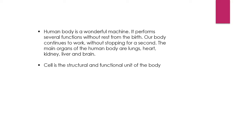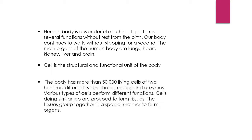Cell is the structural and functional unit of the body. The body has more than 50,000 living cells of 200 different types. Various types of cells perform different functions through hormones and enzymes. Cells doing similar jobs are grouped to form tissues, and tissues group together in a special manner to form organs.